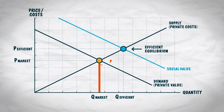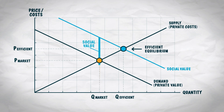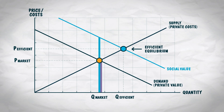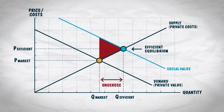Let's take a closer look at the marginal value and cost of the last flu shot the market produces. The private value is given by the height of the demand curve and is equal to the private cost given by the height of the supply curve. But the social value is given by the height of the social value curve, which at this point is higher than the cost. Notice that the social value exceeds the cost for all quantities between the equilibrium quantity and the efficient quantity. From the perspective of society, these are units we want to be consumed as their social value exceeds their cost, but the market is not supplying them. We're not maximizing social surplus.